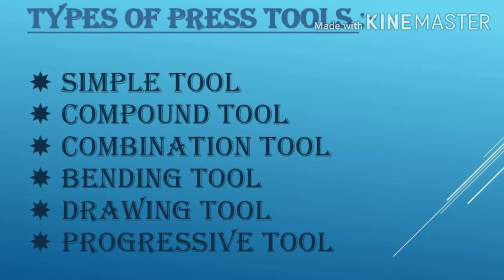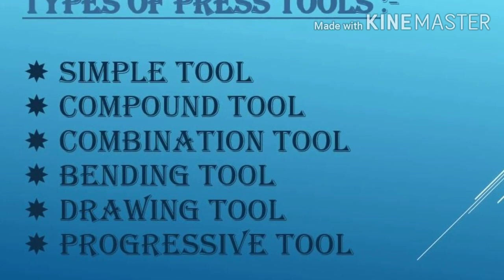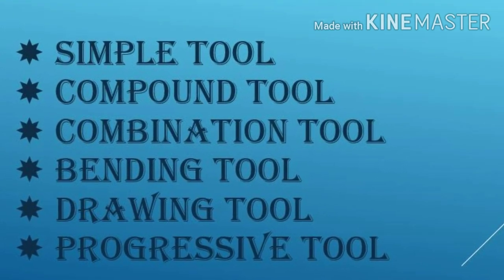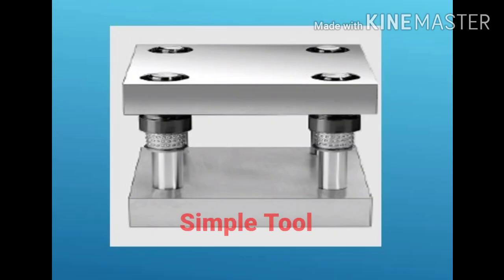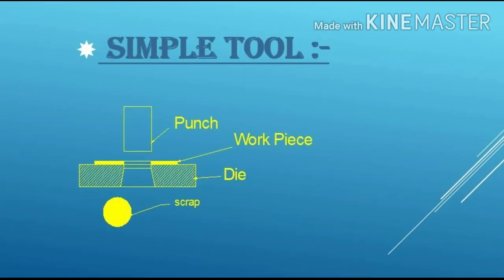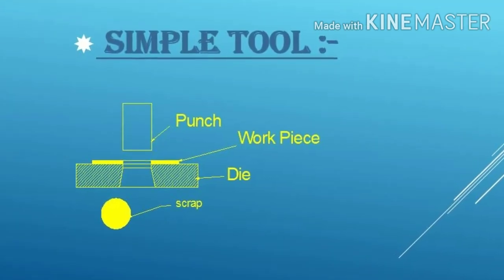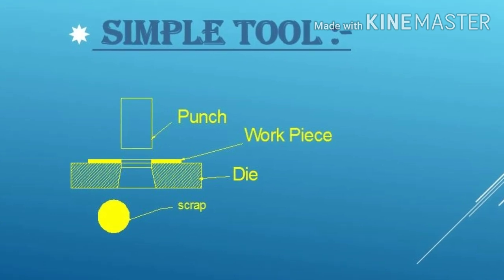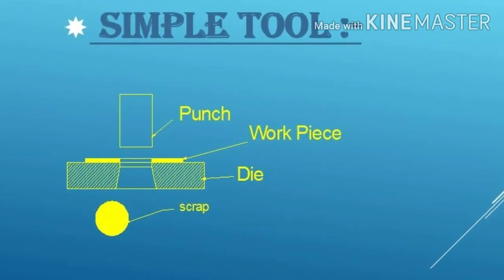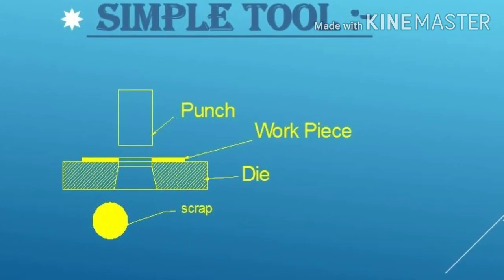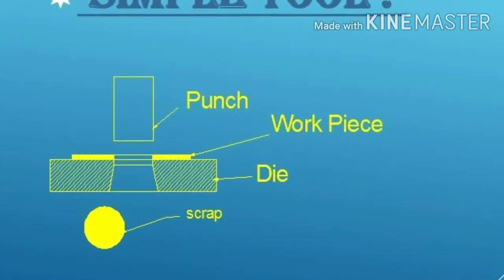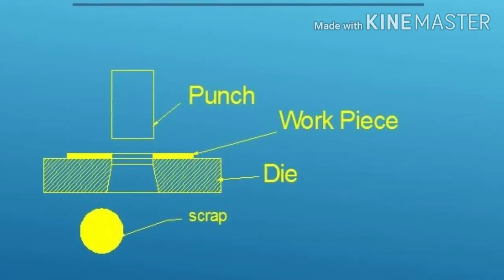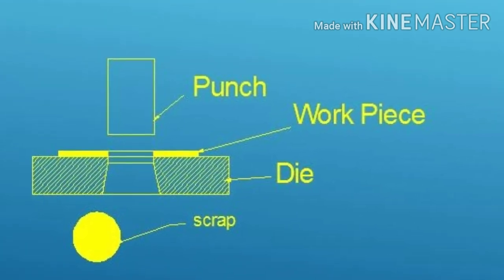Now, going to see the types of press tools: simple tool, compound tool, combination tool, bending tool, drawing tool, and progressive tool. In the case of a simple tool, this tool is designed to perform the piercing and blanking operations, meaning the construction of this tool is very simple. In the image, you can see the construction — the punch comes down, the workpiece is there, we have provided the die, and after cutting the operation you can get the scrap. This is the construction of the simple tool.